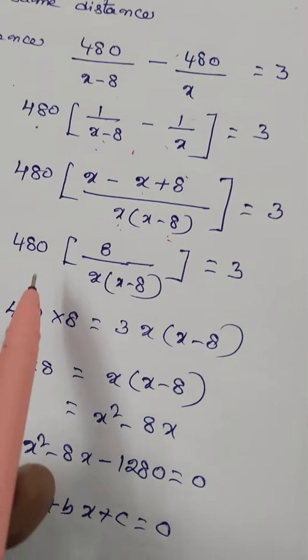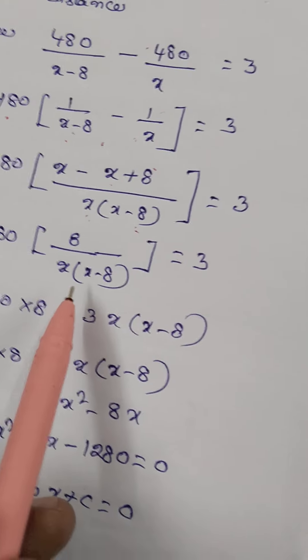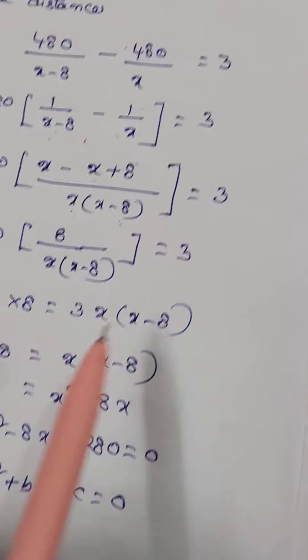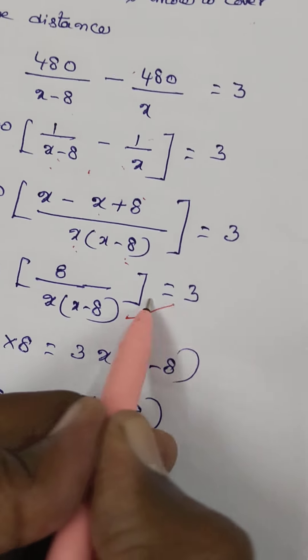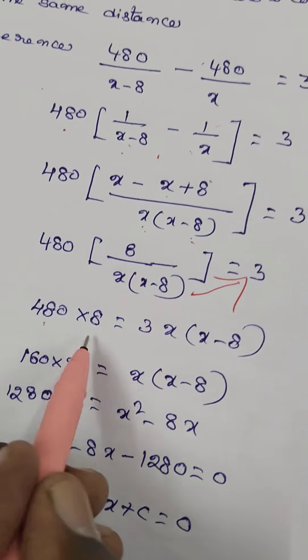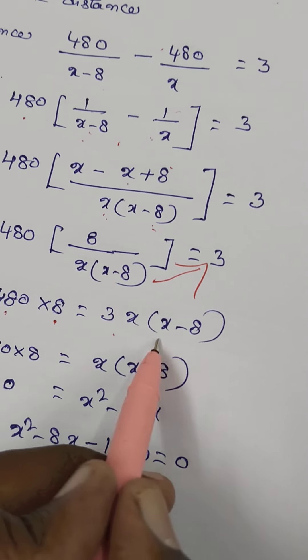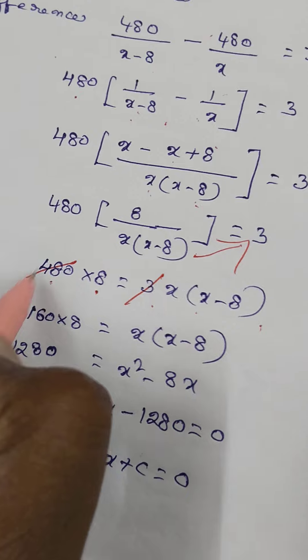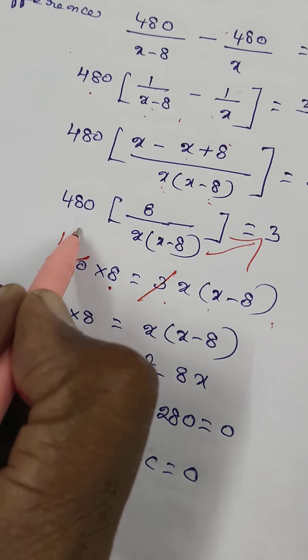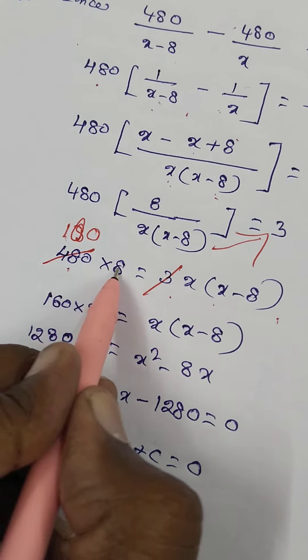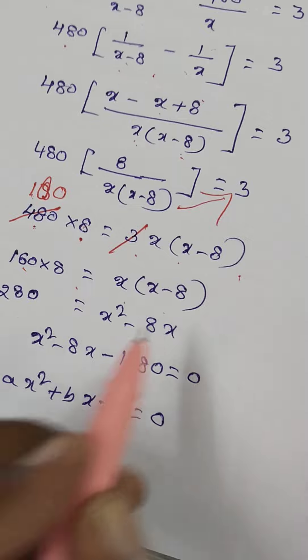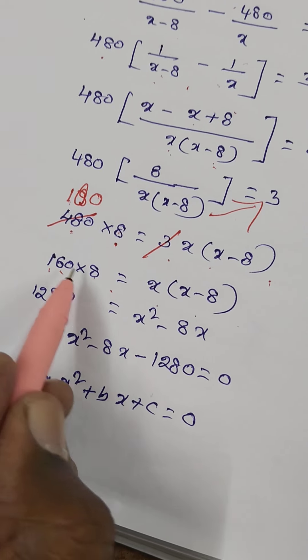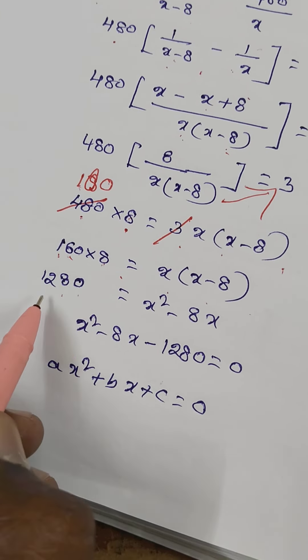Taking cross multiplication, 480 times 8 equals 3x times (x minus 8). So 3 cancels, 480 divided by 3 is 160. 160 times 8 equals x times (x minus 8). 160 times 8 is 1280.